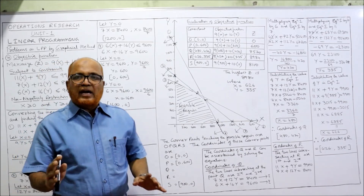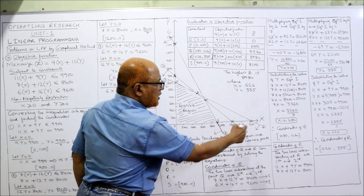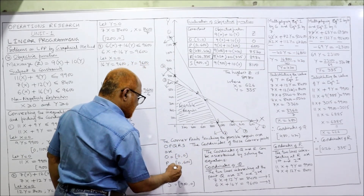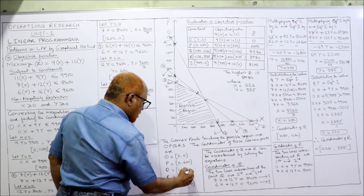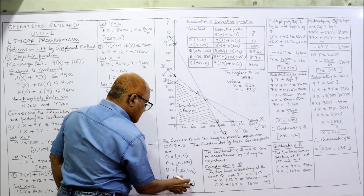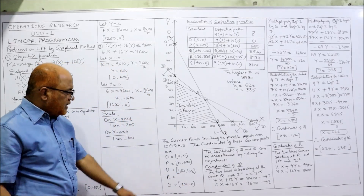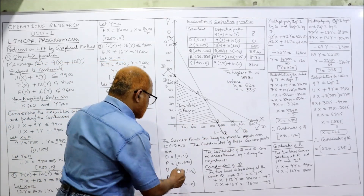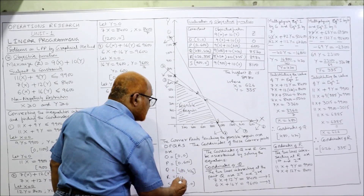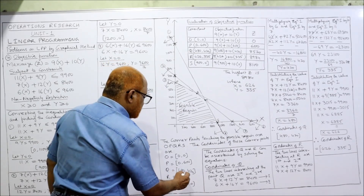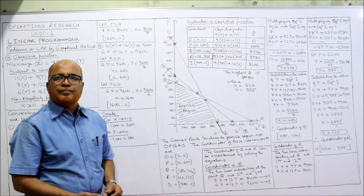So we have calculated: for Q, the values are x = 480 and y = 420. The coordinates of R are x = 626 and y = 335. These are the values for both intersection points Q and R.